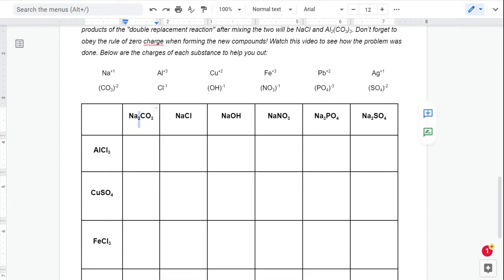There's two sodiums here because sodium is a plus one and carbonate's a minus two. But sodium is now going to mix with chlorine. Sodium being a plus one and chlorine being a minus one. I only need one of each of those. One sodium and one chlorine.